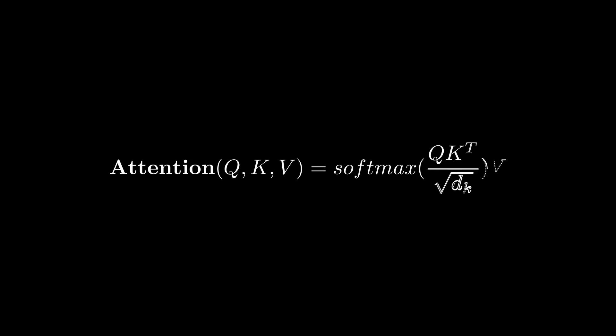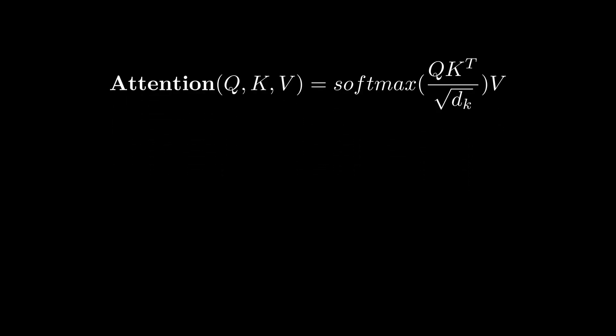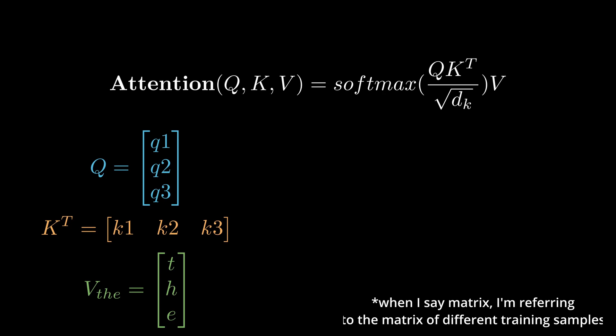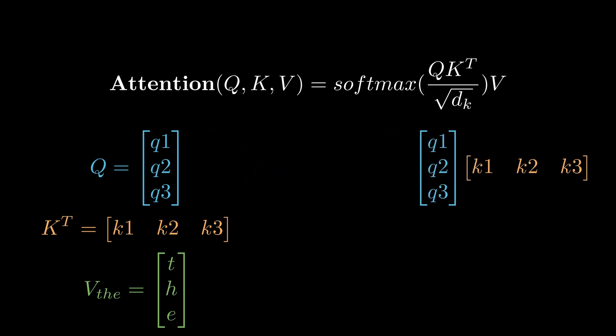In practice, we actually wouldn't use a nested for loop to multiply each query by all the previous keys, that would just take too long. Instead, according to the paper, we would combine all the queries into a matrix, and all the keys into a matrix, we would just concatenate the vectors into a matrix, and multiply all the queries by all the keys. From the dot products of the rows of the queries by the columns of the keys, we would get the raw context each character has with each other.